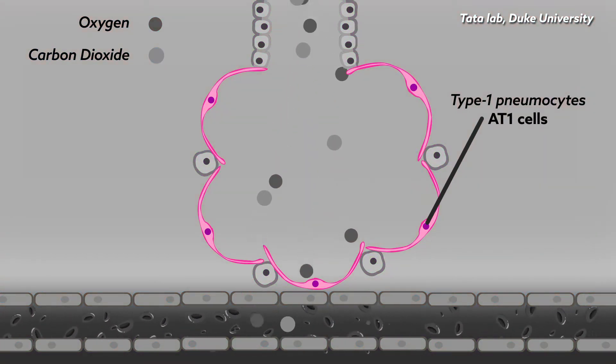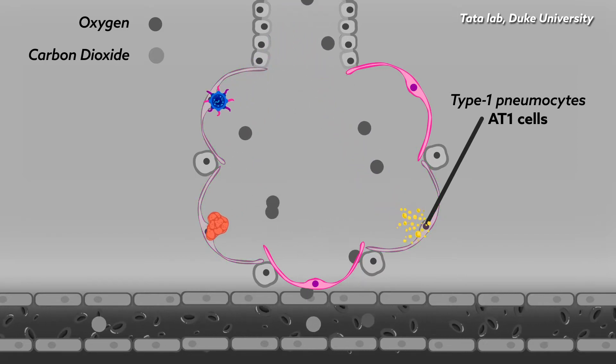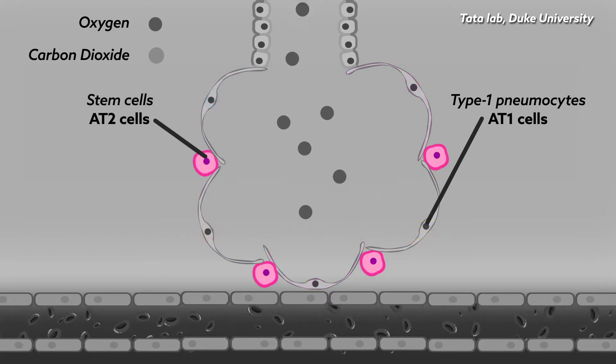Because they're so delicate and thin, these cells are vulnerable to damage by pollutants, viruses, and bacteria. Fortunately, lung tissues also have specialized stem cells, called AT2 cells,